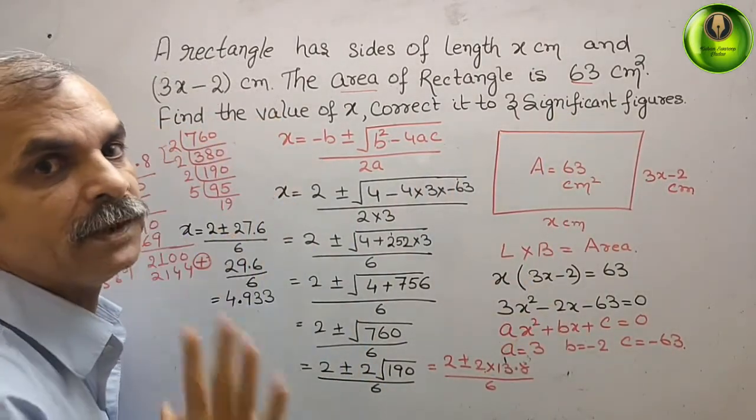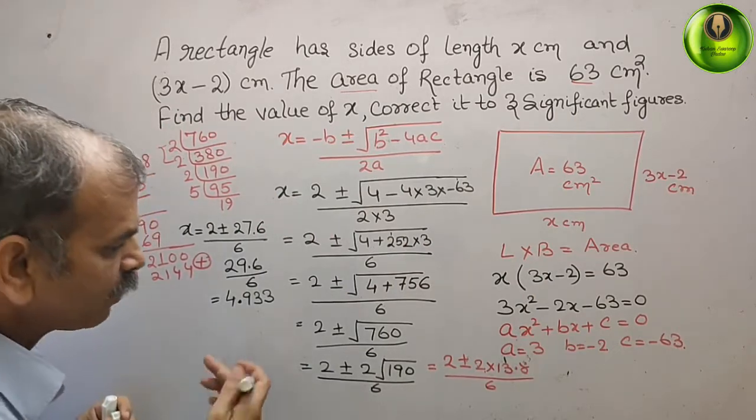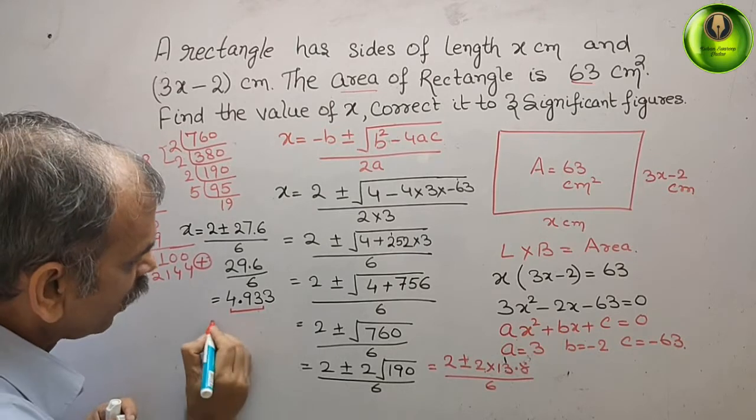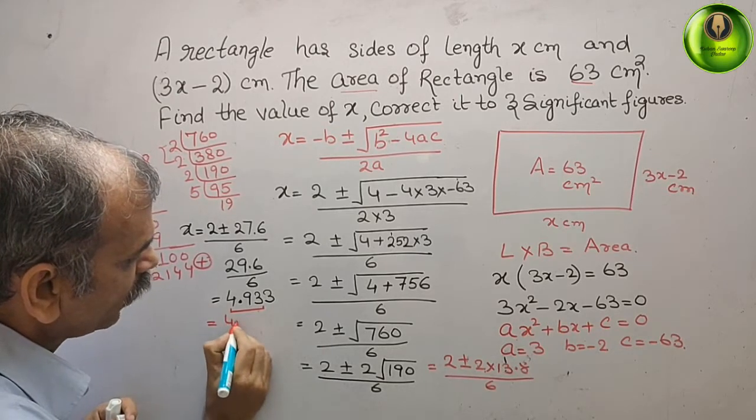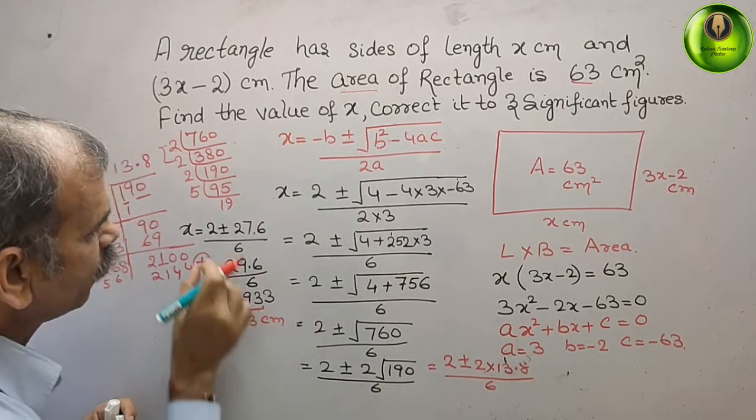That means, only 3 figures should be there. That means, up to 3. That means, from here to here. Therefore, our answer is 4.93 cm is the value for your x.